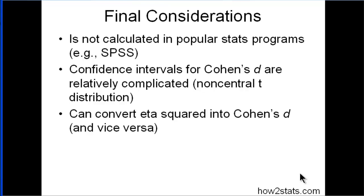You can convert eta squared into Cohen's D. So if you did a one—most people talk about eta squared in the context of ANOVA. So if you did an ANOVA with just two levels in one group, let's just say IQ group 1 and IQ group 2, you can get eta squared in SPSS and then you can convert that into Cohen's D.